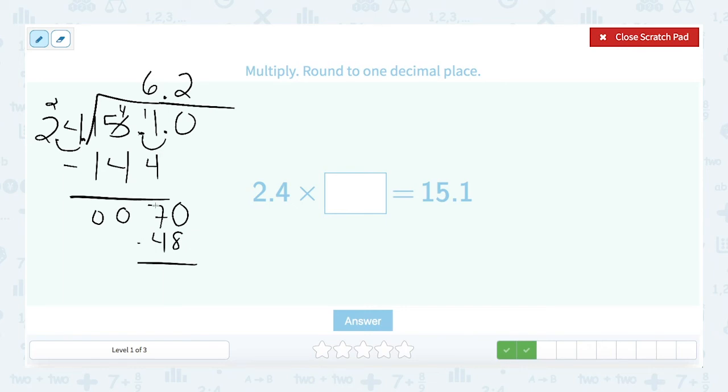I subtract 6. That becomes a 10. 22. And now I'm going to add another 0 and bring that down.